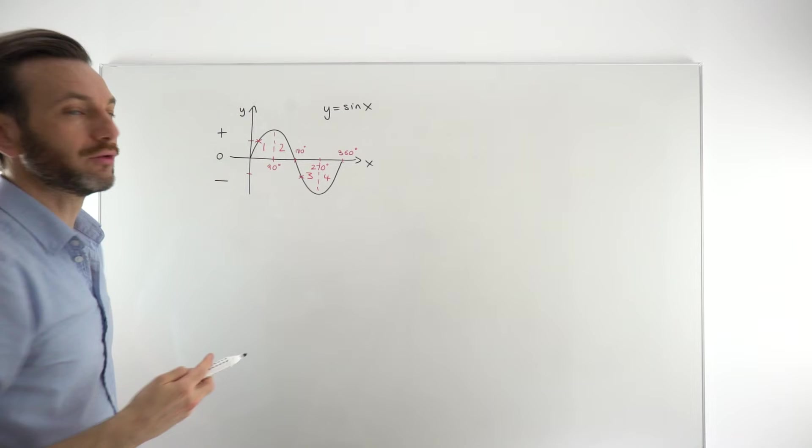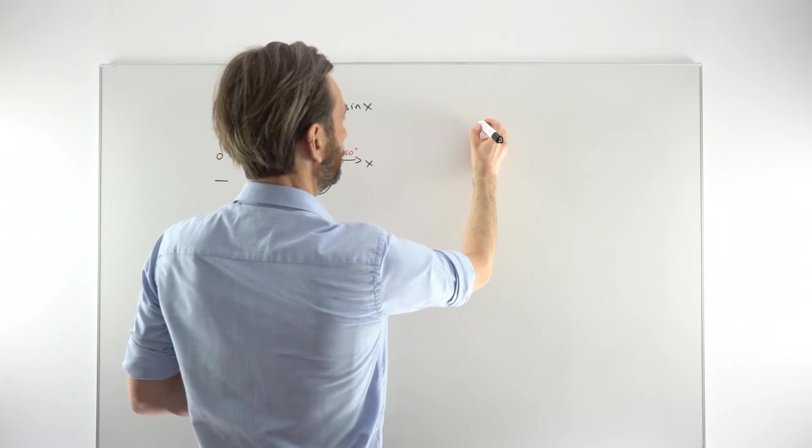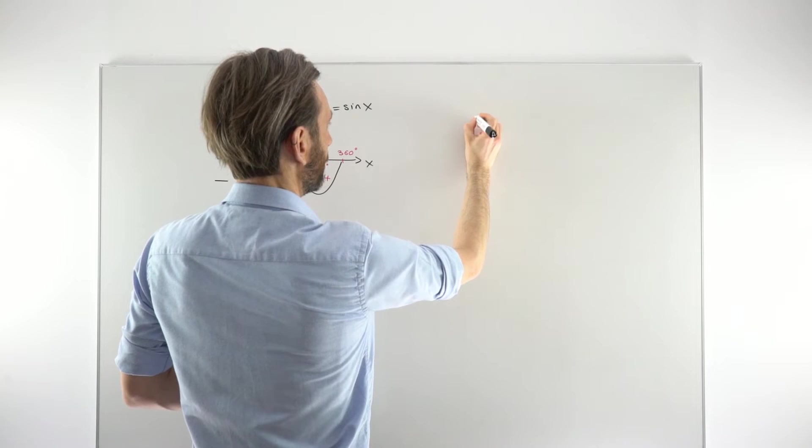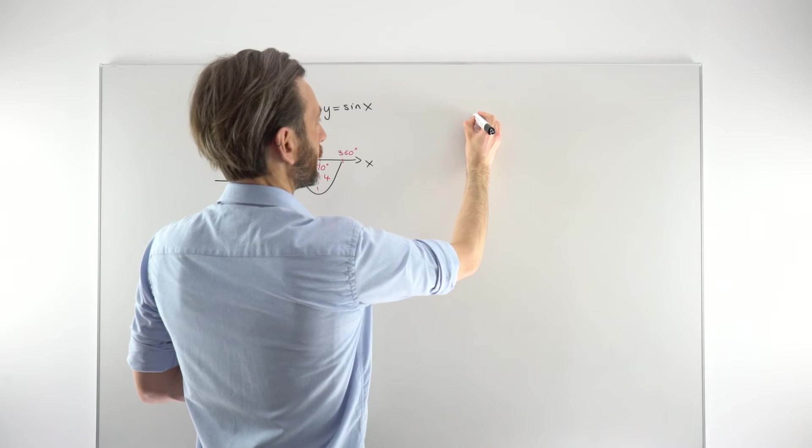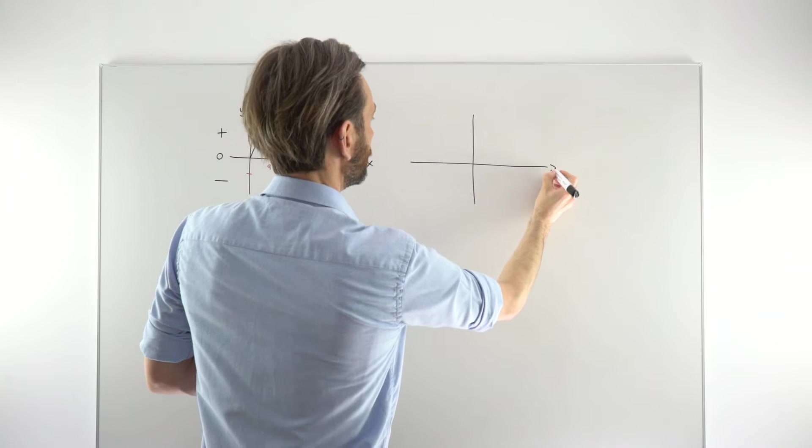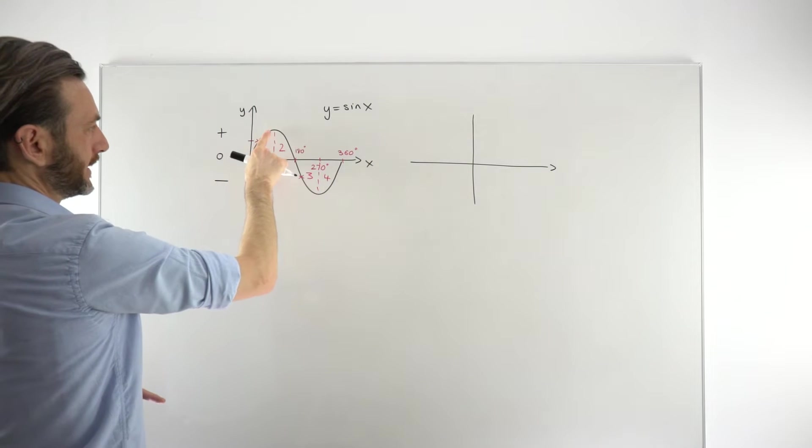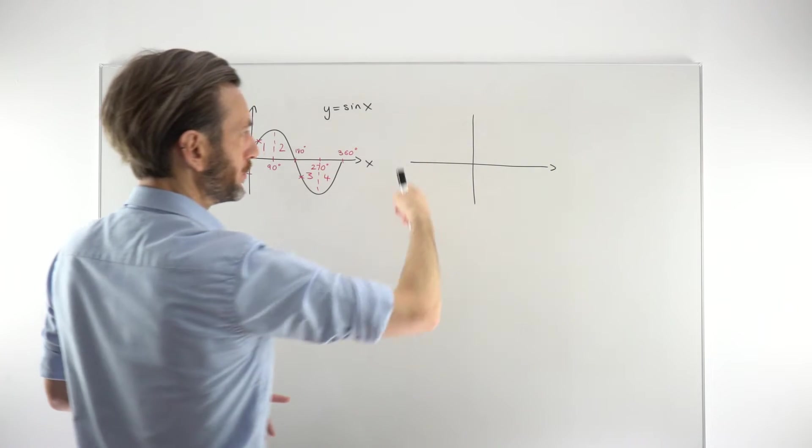That's how we would do this on a graph. But we can re-visualize this on a CAST diagram. In the CAST diagram, we basically set up a cross. And instead of visualizing 0, 90, 180, 270, 360 going along the way, we do it going round the way. So it's kind of like an anti-clockwise circle.